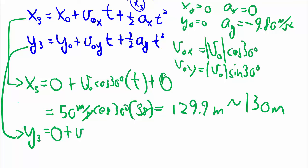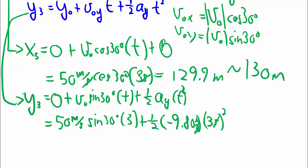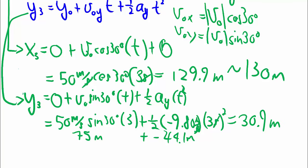Then for my y, again, y0 is 0 plus vO sine 30 degrees times time plus 1/2 AY T squared. Getting a little more space, is equal to 50 meters per second sine 30 times 3 plus 1/2 negative 9.80 meters per second squared, times 3 seconds all squared. Units, those cancel out, and we end up with meters once again, giving us 75 meters over here, plus a negative 44.1 meters, giving us 30.9 meters.